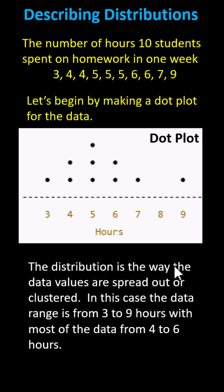The distribution is the way the data values are spread out or clustered. In this case, the data range is from 3 to 9, with most of the data from 4 to 6 clustered here.